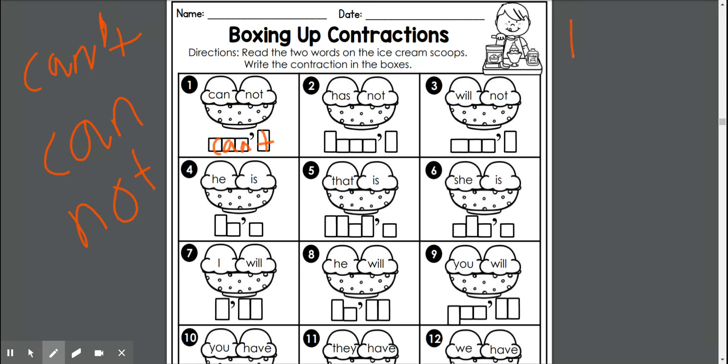We have number two, which begins into has, not. So if we wanted to shorten this into a simpler word for writing or language, it would become hasn't. That apostrophe is really big there. Hasn't.